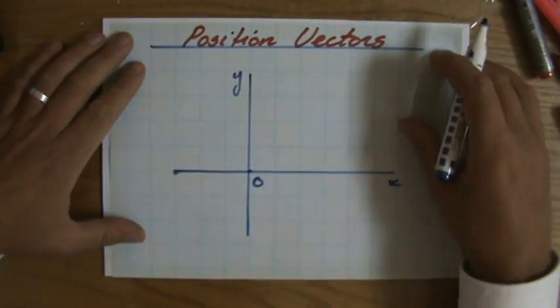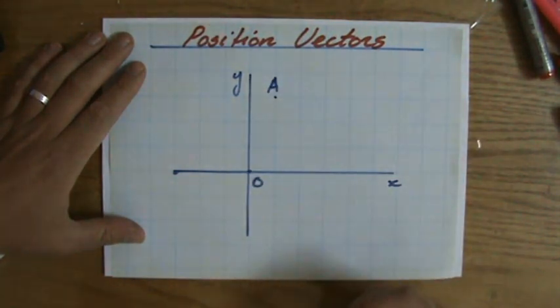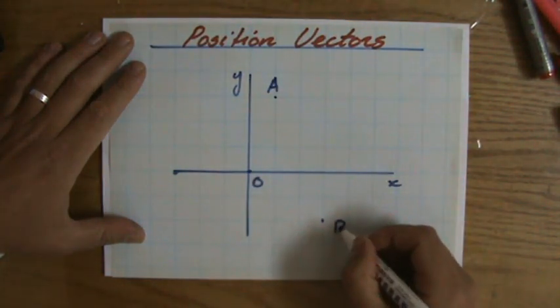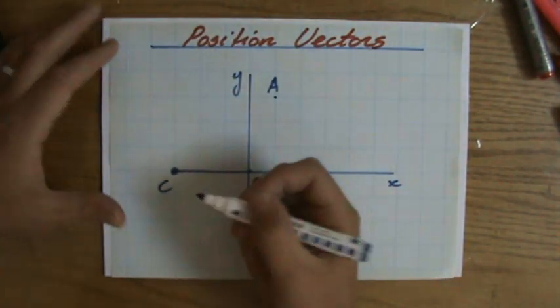And that point over there we call that the origin. Then I can ask you, well, what is the position vector of let's say A relative to the origin? What is the position vector of B relative to the origin? And what is it of, let's put it there, C relative to the origin?